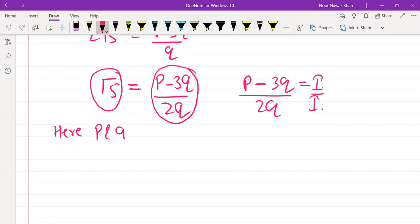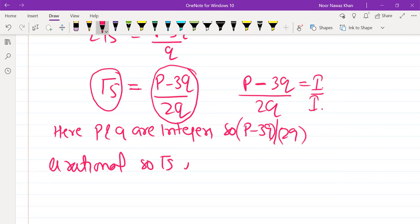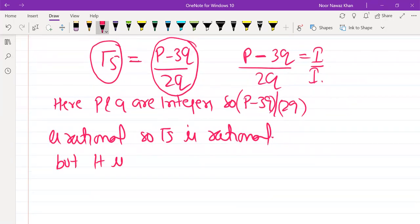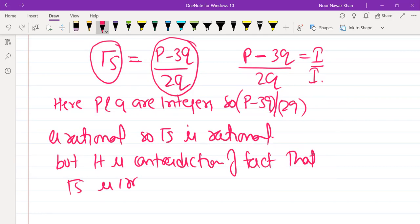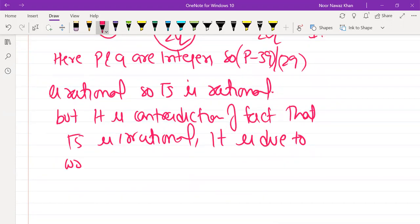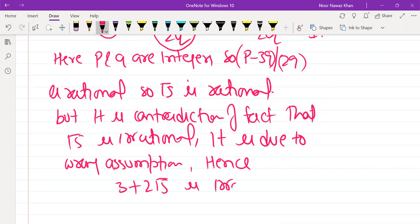Here, p and q are integers. So p minus 3q upon 2q is rational. So root 5 is rational. So it is a contradiction of fact that root 5 is irrational. It is due to the wrong assumption.